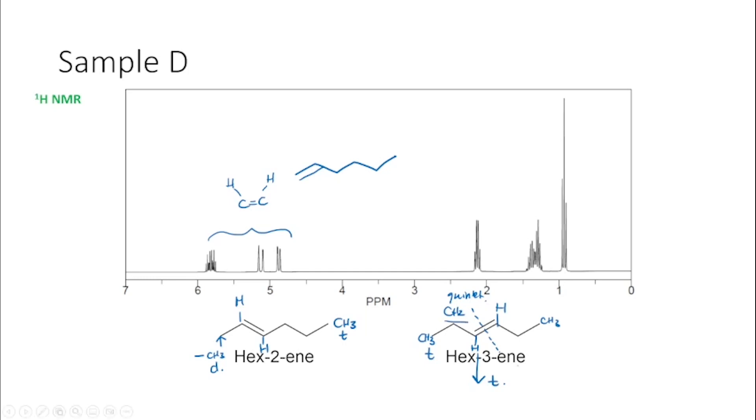So you can see how where the alkene bond sits would change the way we would view our spectrum, or hypothesize what our spectrum would look like. And hopefully that helps you in rationalizing why we have this terminal alkene.